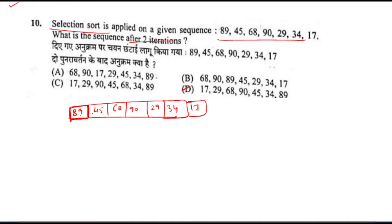Looking at 89, 45, 68, 90, 29, 34, and 17, what is the smallest value? 17. What will you do? Swap to position 1. Now the new sequence will be made.